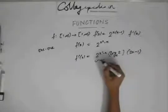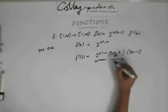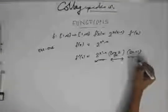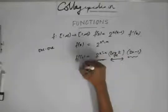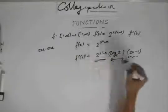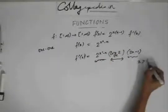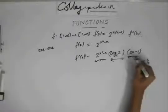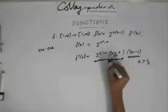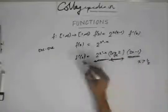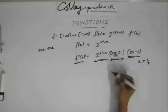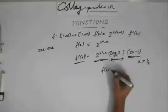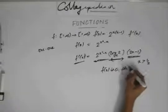You know that this is an increasing function. This is a constant which is positive. And if f'(x) has to be positive, then x should be greater than half. Because if x is greater than half, then this term is positive, this is positive, this is always positive. So this is a positive quantity. Now if f'(x) is positive, that means f(x) is a strictly increasing function.